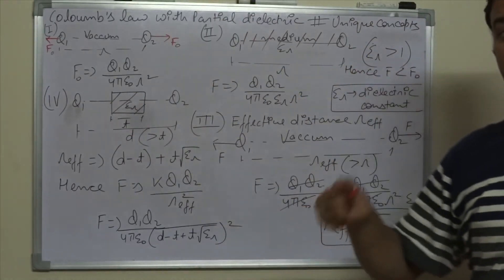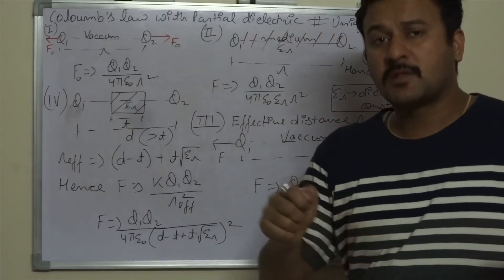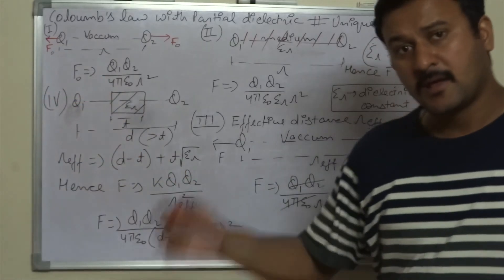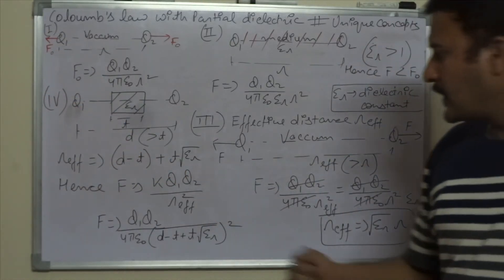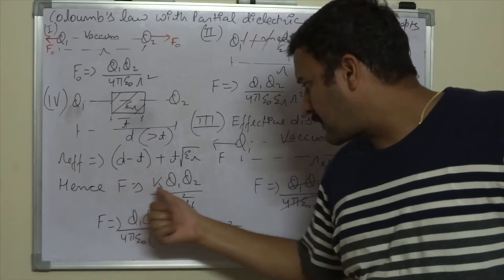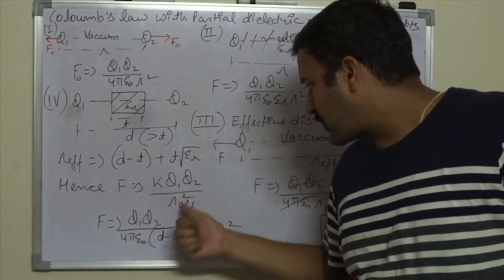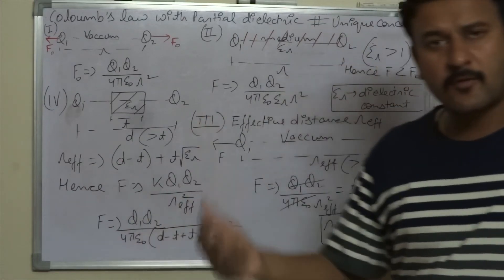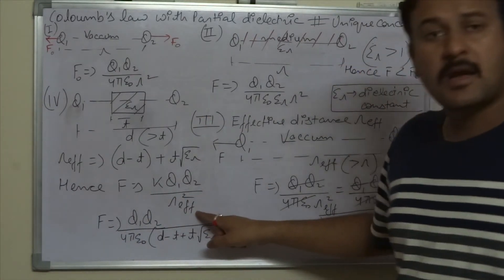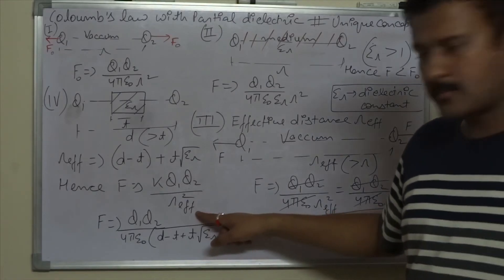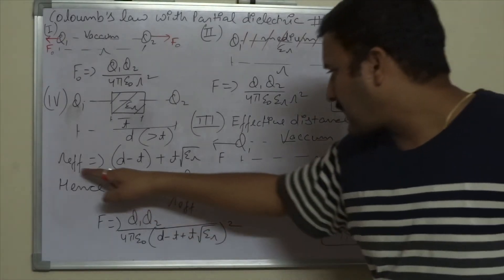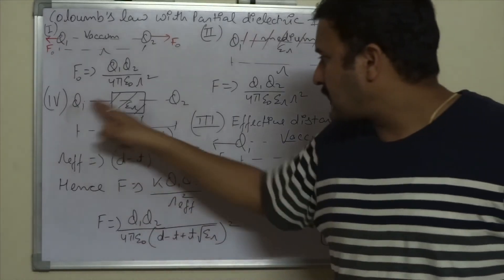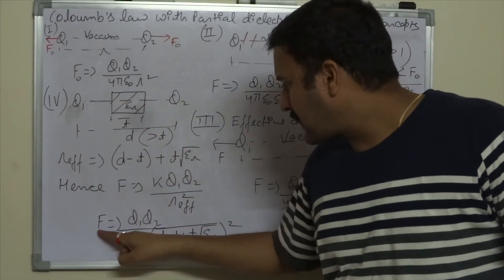The force with vacuum at distance R_effective equals the force with the partially filled dielectric. So we can directly write the force as F = kQ₁Q₂ / R_effective², where k = 1/(4πε₀), since when we use R_effective the medium is treated as vacuum. Substituting R_effective = (d − t) + t√εᵣ gives us the complete expression.